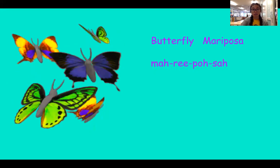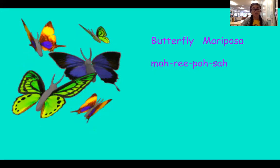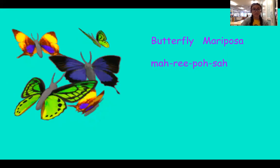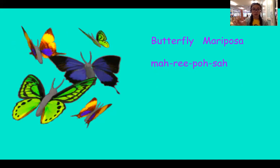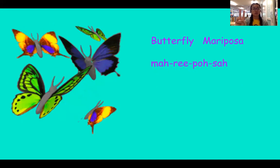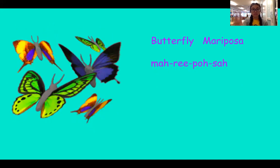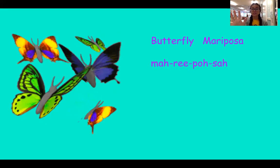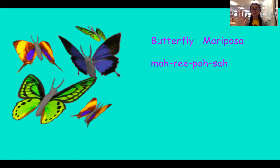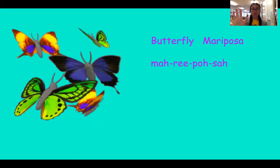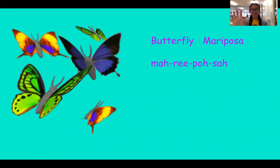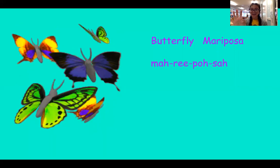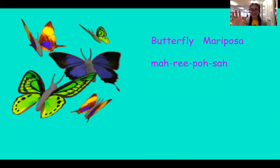They have a lot of different colors. Let's count the mariposas: una, dos, tres, cuatro, cinco. We have cinco mariposas. Cinco is the number five. Good job, friends.